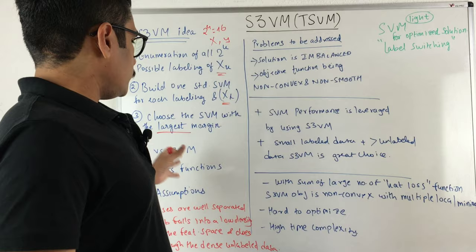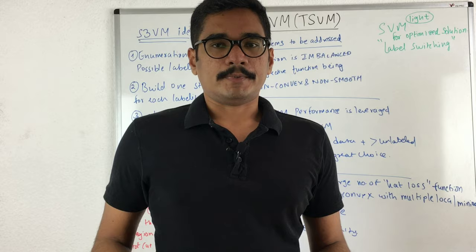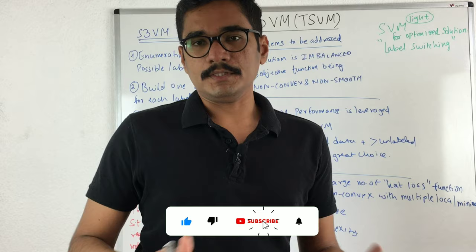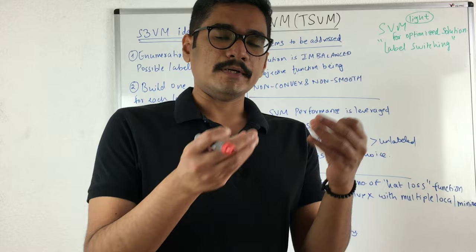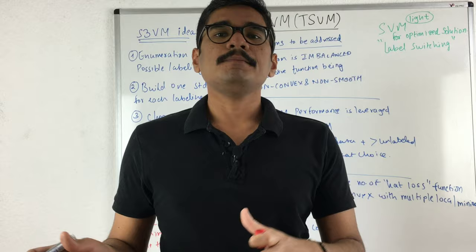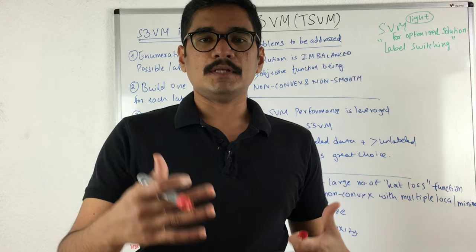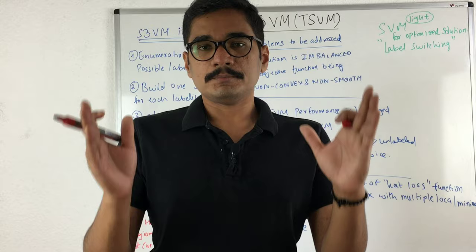SVM assumes that all instances in the feature space are in a labeled format, but getting labels is very difficult in the real world. If you have at least a small portion — say 20% — of labeled samples and the majority — say 80% — as unlabeled samples, you can go with S3VM. It uses labeled and unlabeled data in an iterative fashion to get a maximized decision boundary so that all instances are well separated from each other.